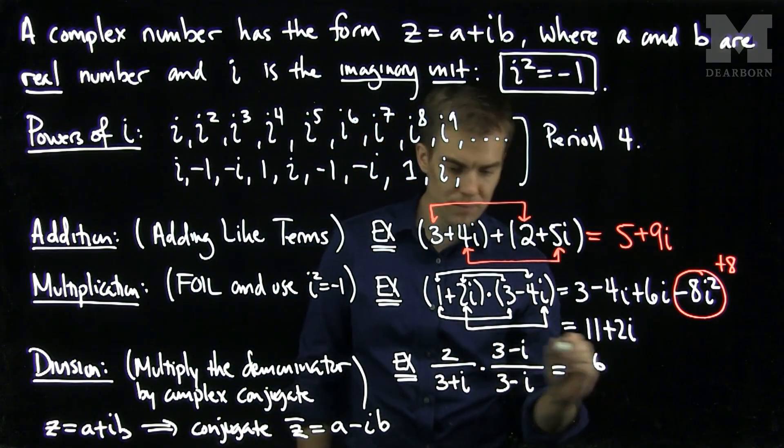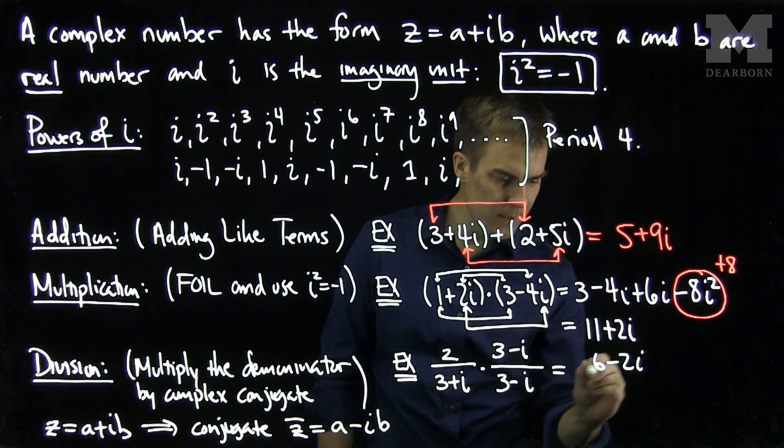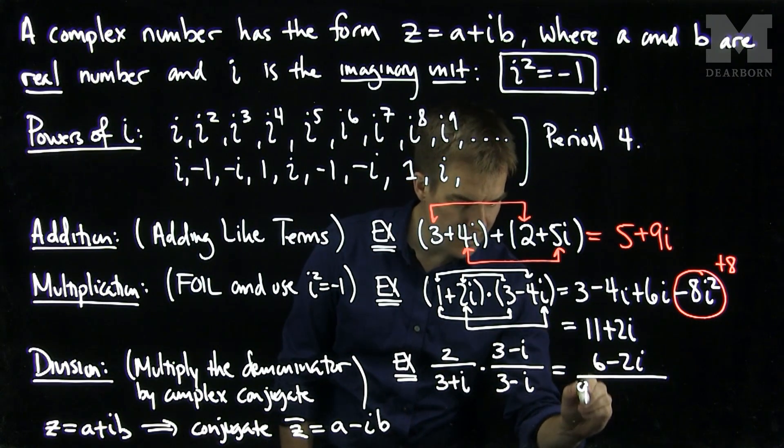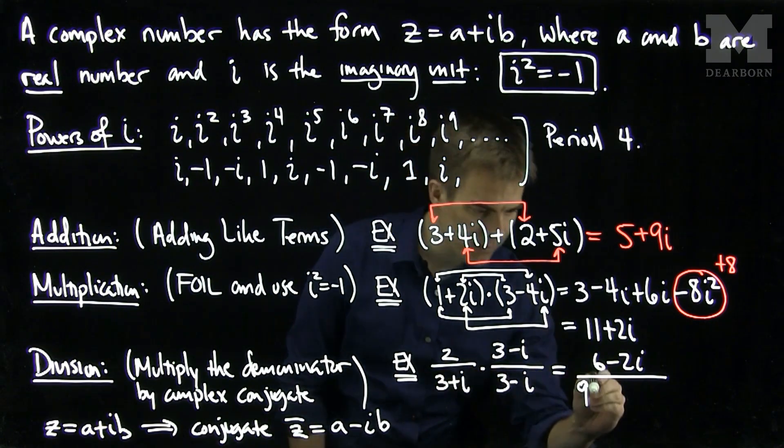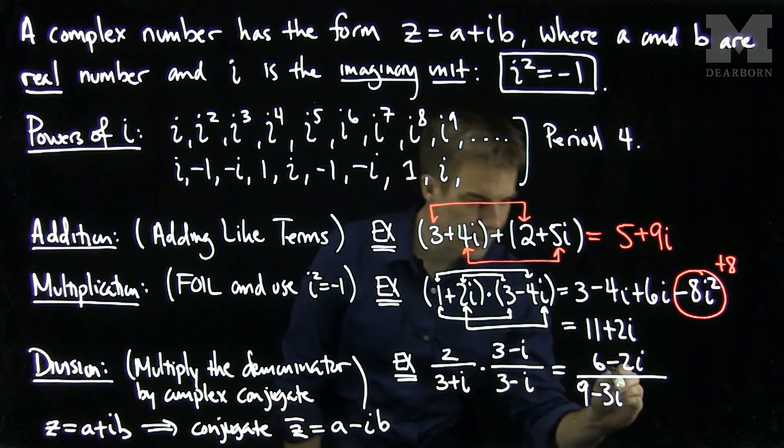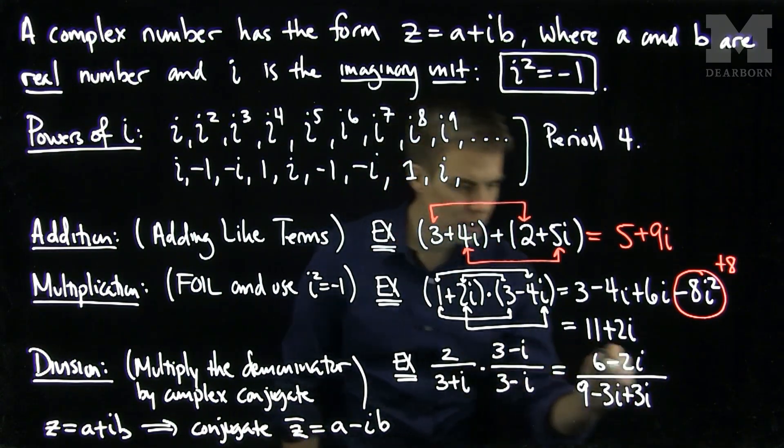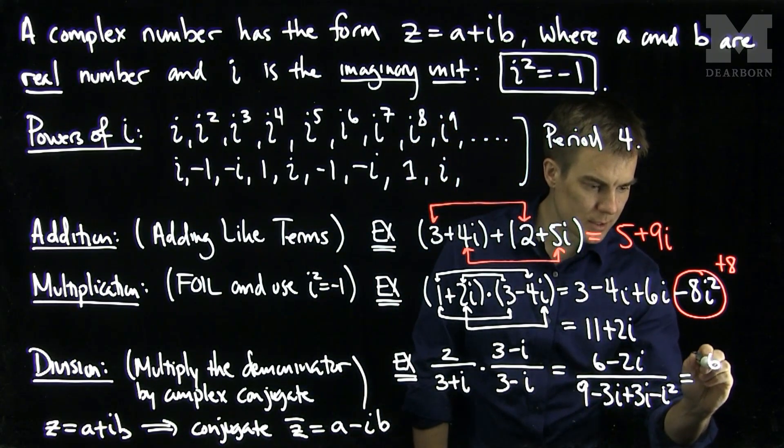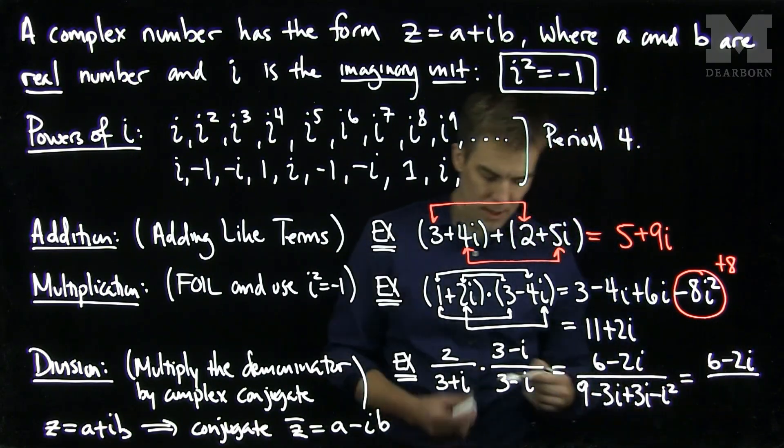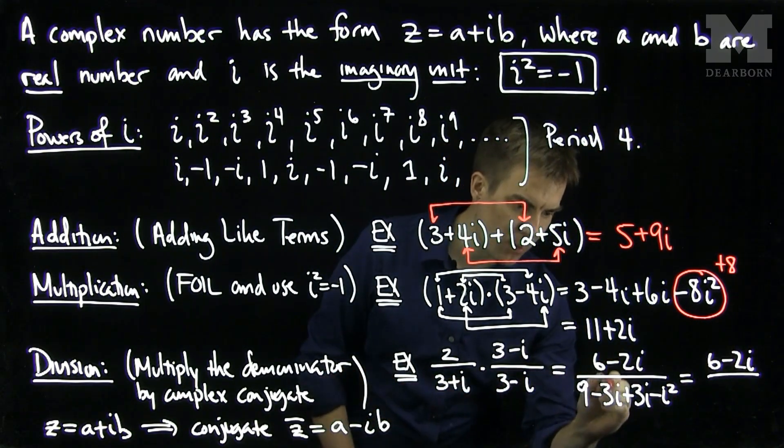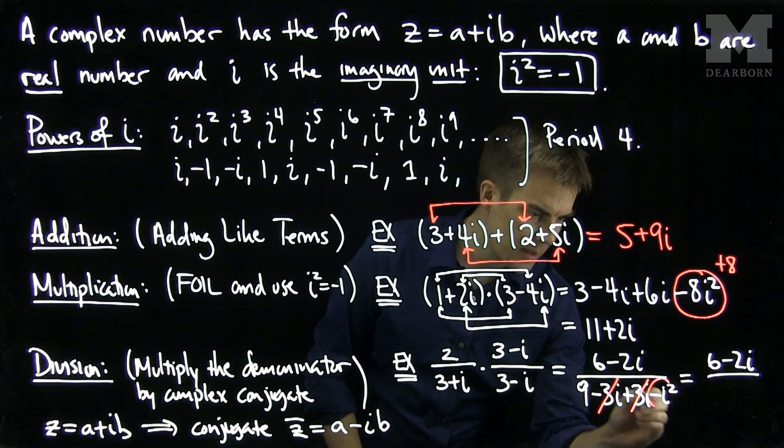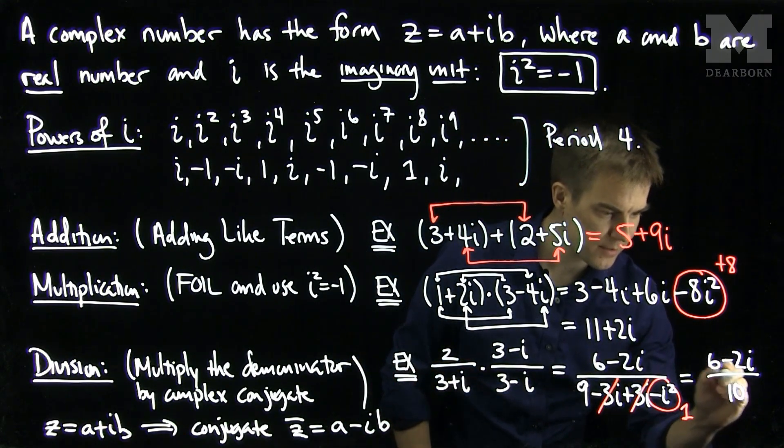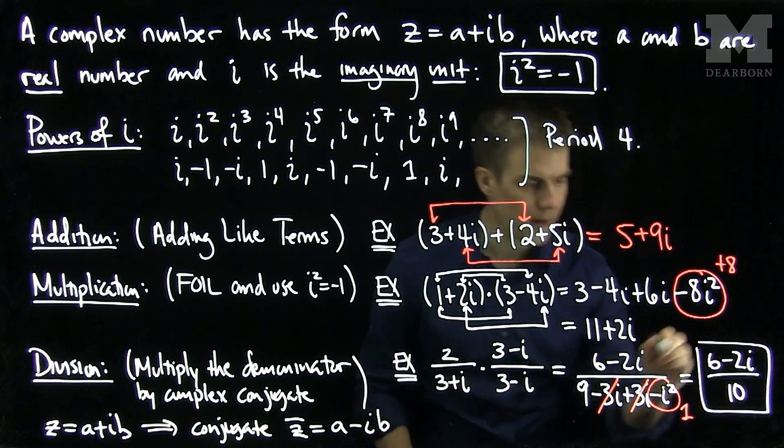2 times 3 is 6. 2 times negative i is negative 2i. And then the denominator becomes 3 times 3, foiling, which is 9. Then I have the outer terms, which are negative 3i. The inner terms are positive 3i. And the last terms are negative i squared. And when we simplify this, it becomes 6 minus 2i. Now the 3i and the negative 3i will cancel. Negative i squared is positive 1. So I'll have 9 plus 1, which gives me a 10. And that is how we divide complex numbers.